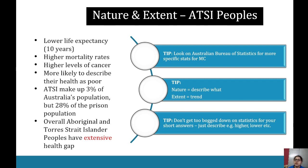A tip here: look at the Australian Bureau of Statistics for more specific statistics for multiple choice. In multiple choice you're likely to encounter more specific stats — for example, questions like which cancer has the highest mortality rates, or what is the life expectancy gap between female non-ATSI peoples and female ATSI peoples.